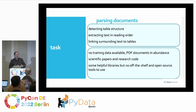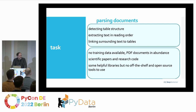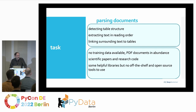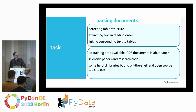When having a complex structured document, there are several things you need to take care of. The first is discovering the rough layout structure, which includes detecting the table structure. You also need to get the text out in a way that makes sense — if you have a document with several columns, it is not trivial to get the reading order correct. In some cases you also have to link tables with the surrounding text in order to identify the table content correctly.